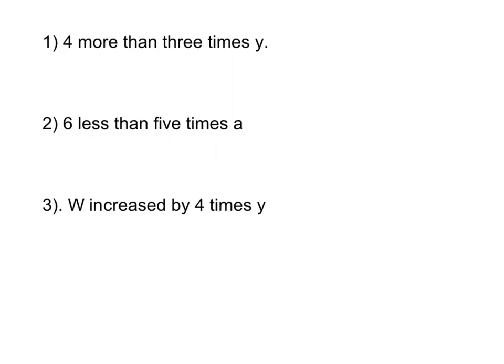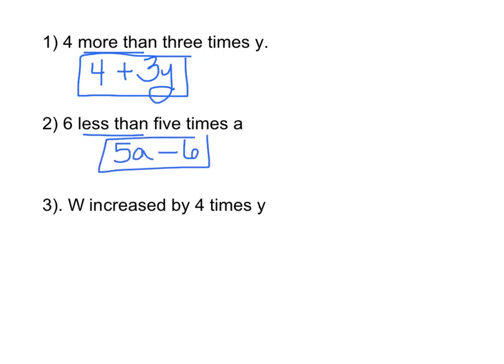Write down these three examples. Four more than three times y. Six less than five times a. W increased by four times y. Number one. Four more than three times y. How would you write that? More than means add. We could say four more than three times y, which is 3y plus 4. You could also have three y plus four. Number two. Six less than five times a. There's our phrase less than. That obviously means subtraction. But we have to flip the order. Five times a would be five a. Six less than that would be five a minus six. You cannot have six minus five a. Number three. W increased by four times y, which is W plus 4y. And there's your answer.